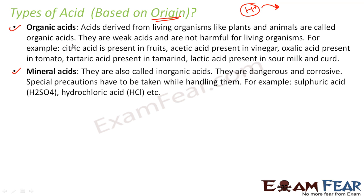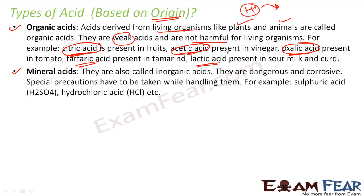Organic acids are derived from living organisms like plants and animals. They are generally weak acids and not harmful. For example, from lemon we get citric acid, from vinegar we get acetic acid, oxalic acid from tomato, tartaric acid from tamarind, and lactic acid from milk and curd. These acids come from natural things and they are weak and not harmful.